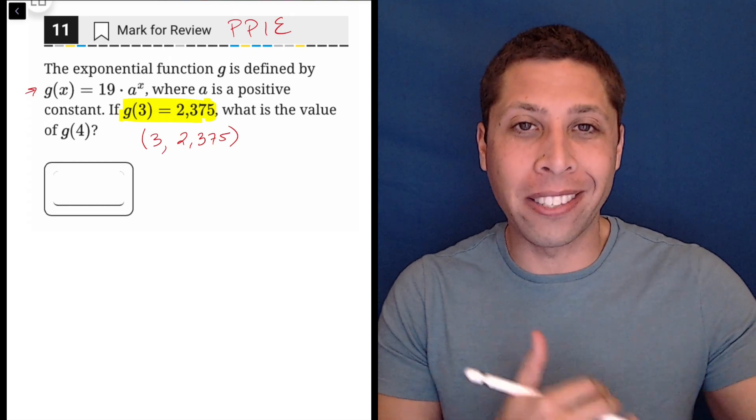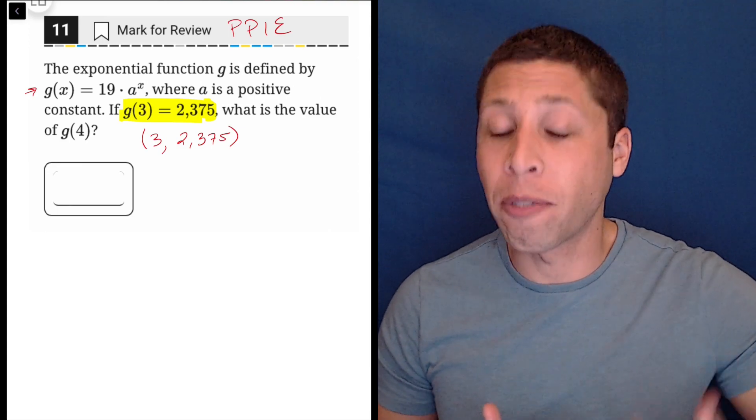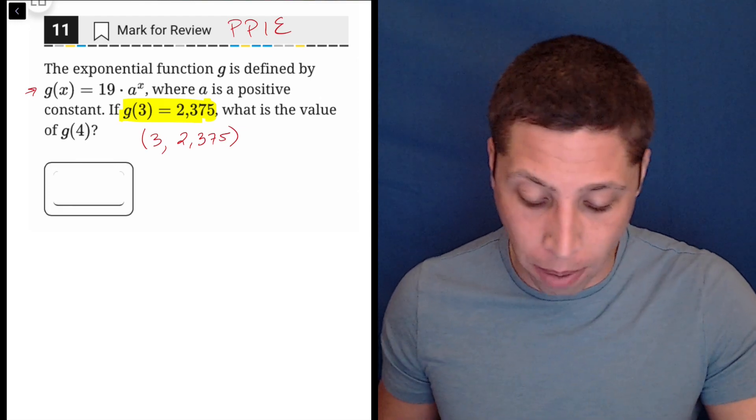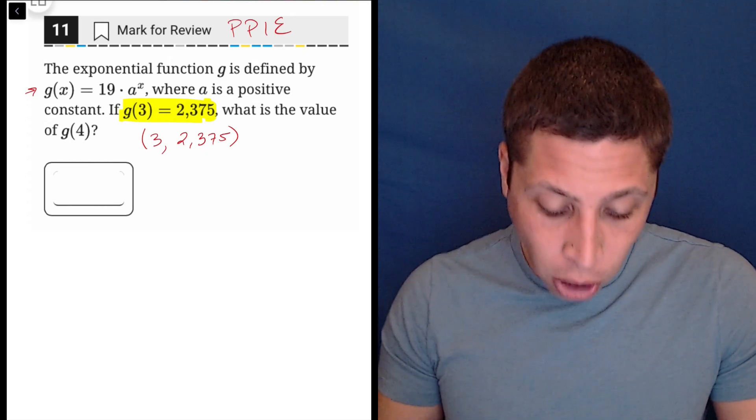The hardest part for most people is they don't think of function notation as providing you with a point. So you have to be able to translate that point into the more familiar x, y. At least for me, I have to think of it that way. So eventually we're going to do g of 4, but let's start with just plugging the point in.